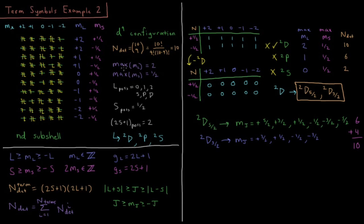We're looking at all 10 possible combinations for arranging 9 electrons in these 10 spin orbitals. I have that drawn over here — basically there's only one spin orbital that isn't filled at any given time, and that empty orbital travels from right to left as we go through the cases.